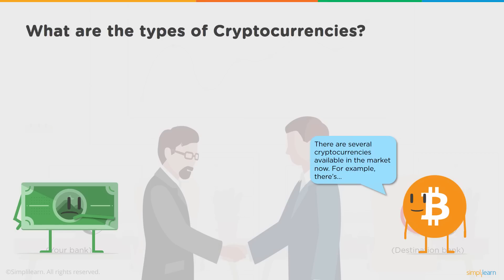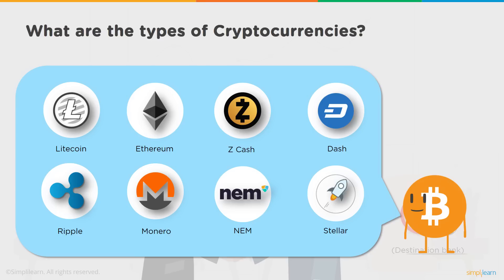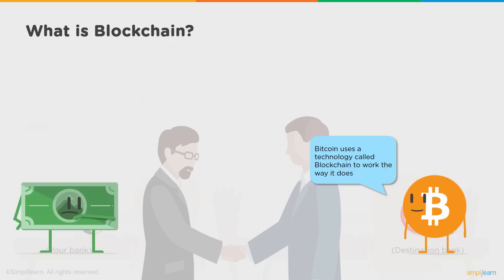What are the types of cryptocurrencies in the market? There are several. A few popular cryptocurrencies apart from Bitcoin that have major market capitalization and trading share are Litecoin, Ethereum, Zcash, Dash, Ripple, Monero, NEM, and Stellar. These are just a few — there are hundreds and thousands of cryptocurrencies evolving on a daily basis. What is blockchain?